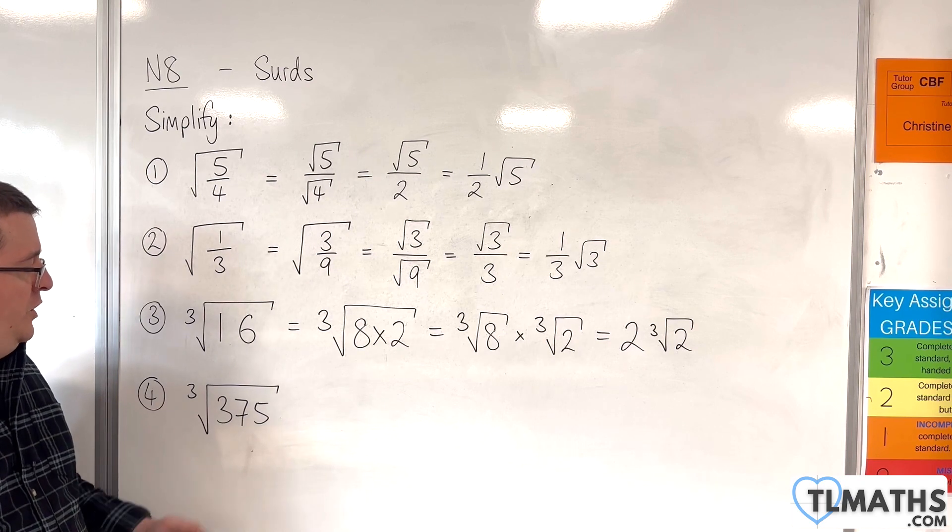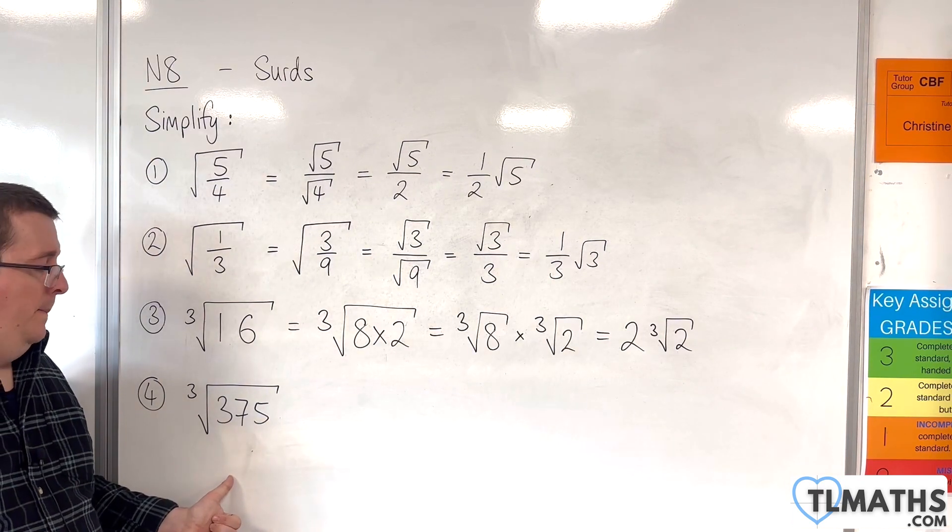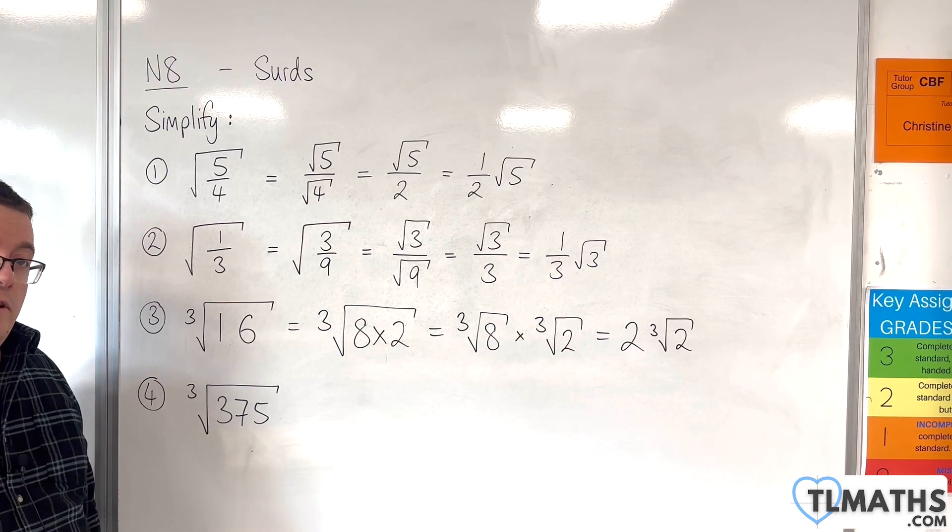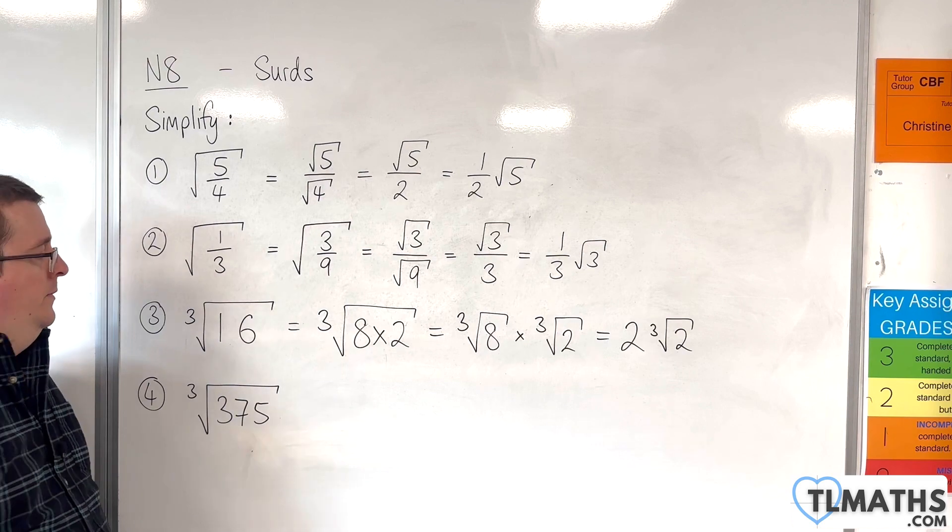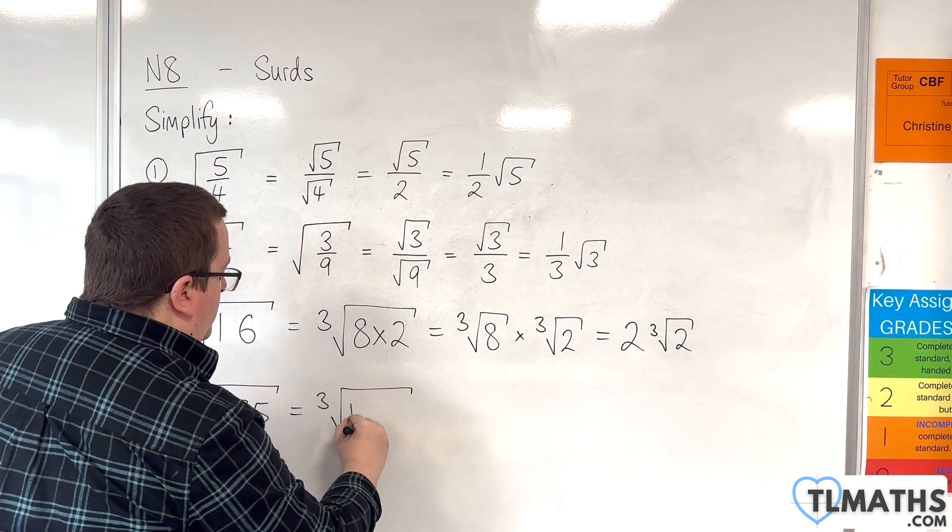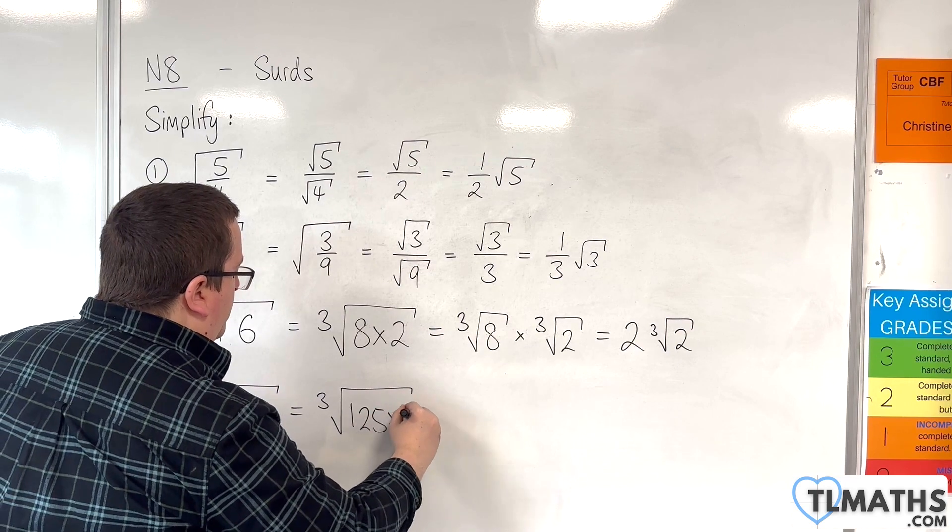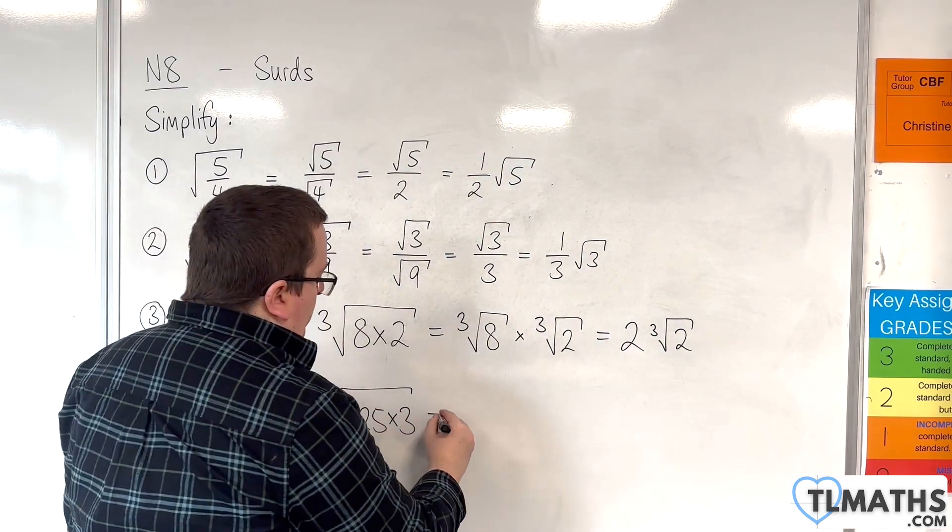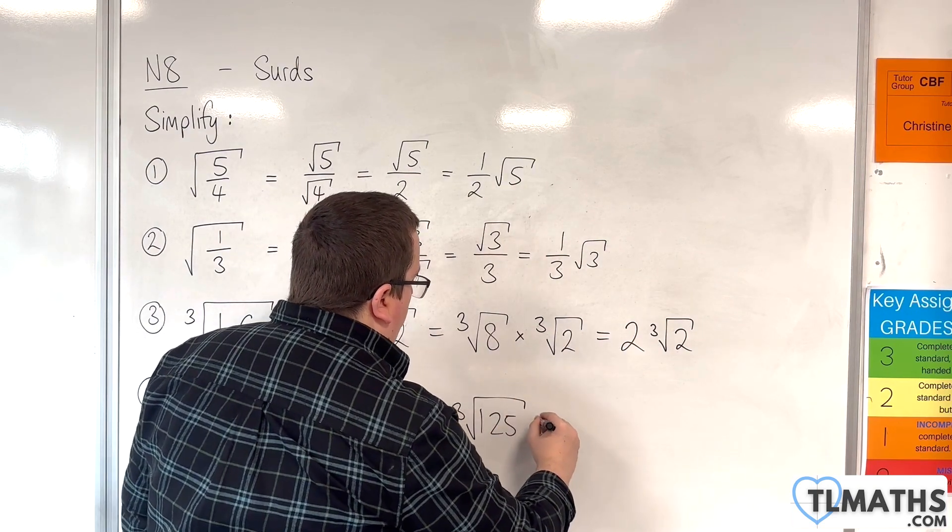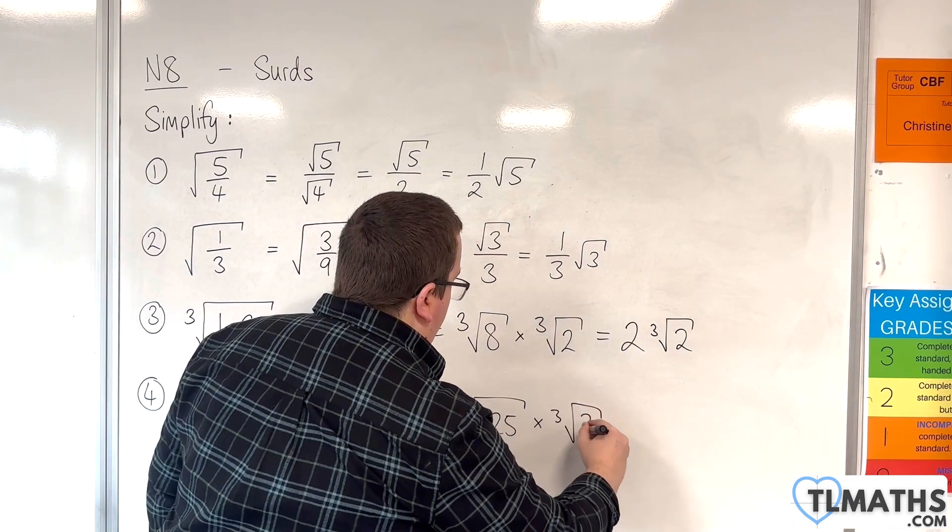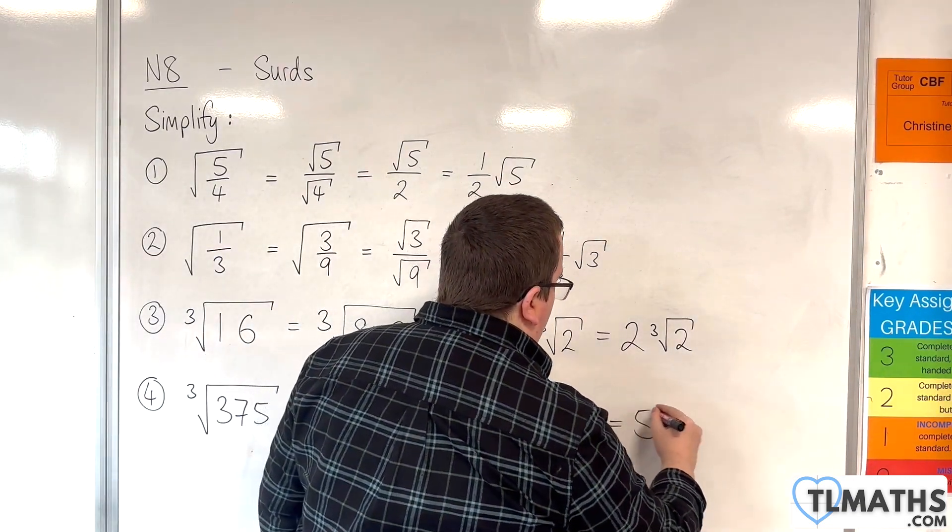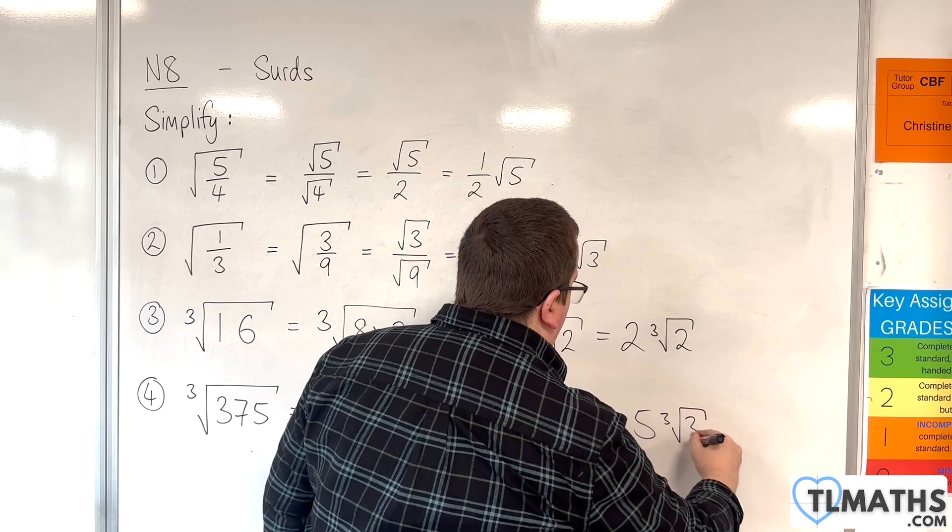Now, number 4, we've got the cube root of 375. Now, the cube number that goes into 375 is 125. 5 cubed. So, we can write this as the cube root of 125, and that's times 3. So, separate that out. Cube root of 125 times by the cube root of 3. Cube root of 125 is 5. So, this is 5 cube root of 3.